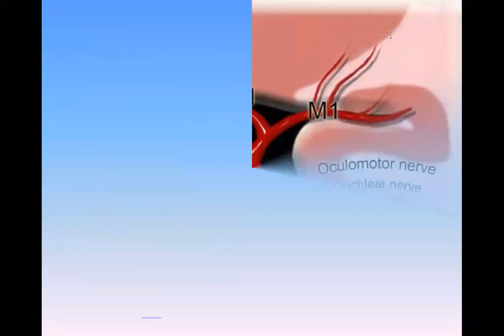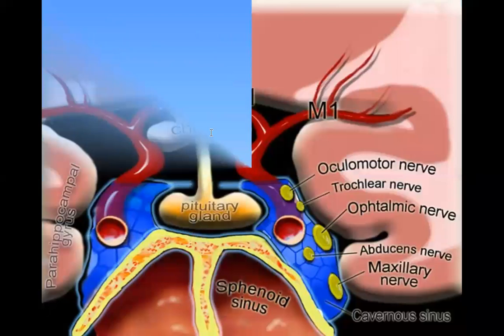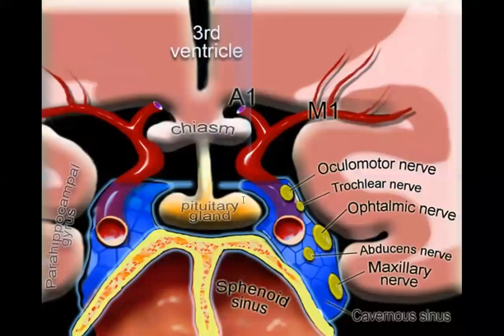As we see in this picture, this is the pituitary gland, this is the stalk, this is the optic chiasm anteriorly, inferiorly the sphenoid bone and the sphenoid sinus. On each side: cavernous sinus and their contents.